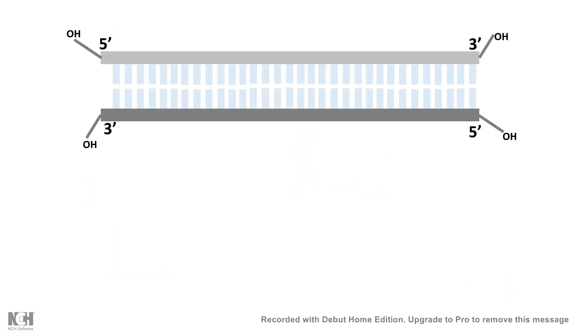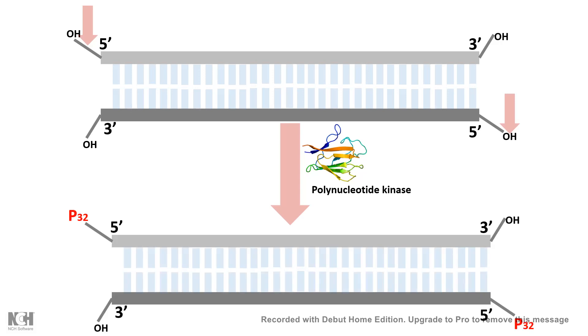Now this hydroxyl group can be used to attach several other nucleotides at the end. This is done by polynucleotide kinase. Polynucleotide kinase can attach new nucleotides at the end, and at the 5' end, we can use a radiolabeled nucleotide to label it.